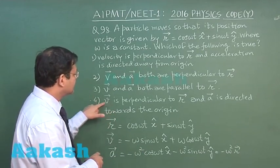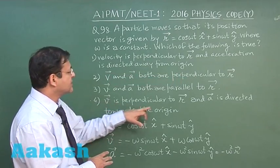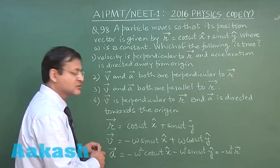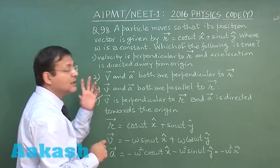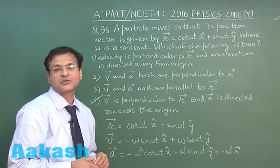So if you search the answer, this is answer 4 which is the most appropriate. Velocity is perpendicular to r and acceleration is directed towards the origin. So I will be marking answer 4 for this question 98. Now let us look at next question, question 99.